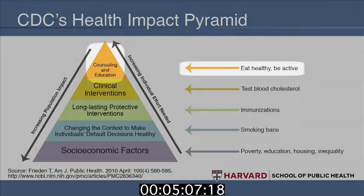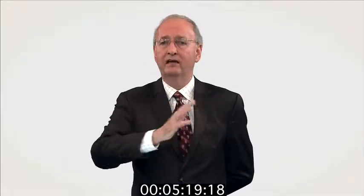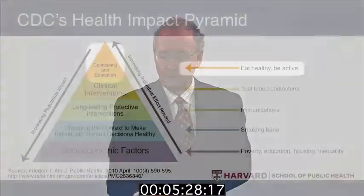Counseling and education is an example of an approach that tries to get people to change what they do at the individual level. Some people think all we have to do is tell people to do the right thing — don't drink and drive, try to eat right, try to exercise more — and that's all it should take, and that society has no business doing anything else. That's a values argument very much present in the US right now.